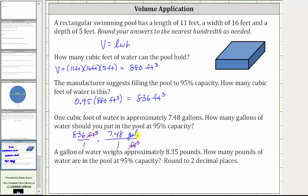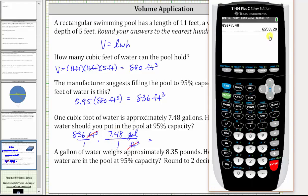So the number of gallons is 836 times 7.48, which is 6,253.28, so at 95% capacity, the pool will hold approximately 6,253.28 gallons of water.